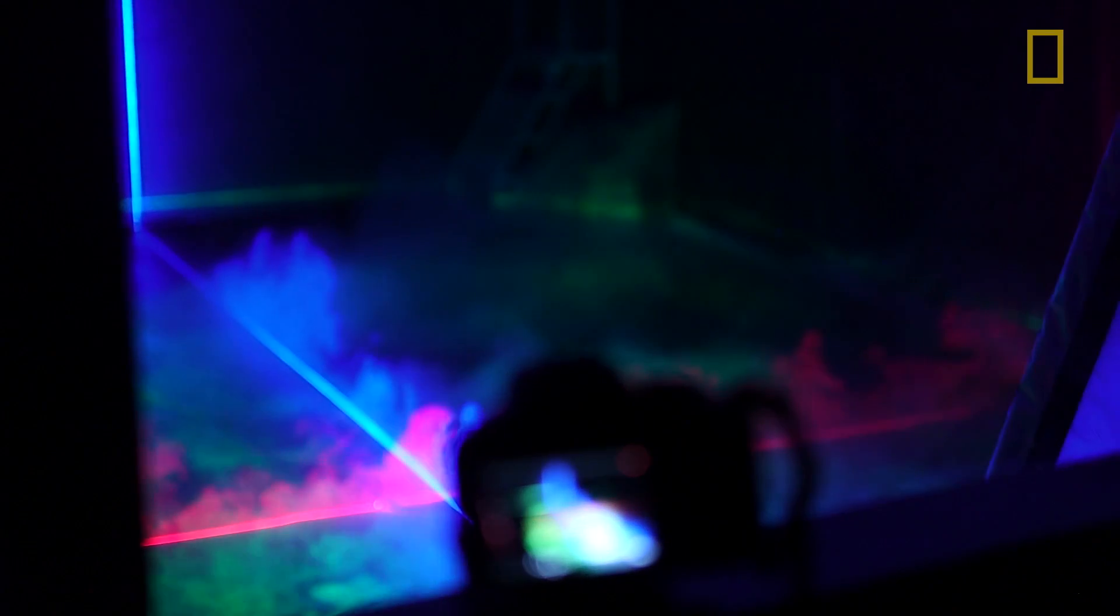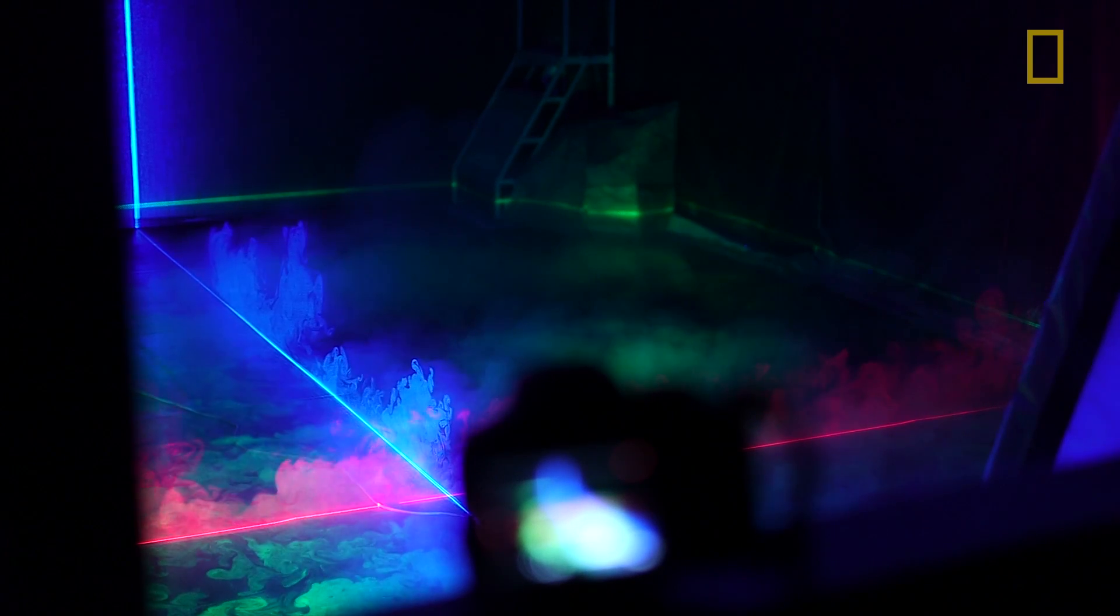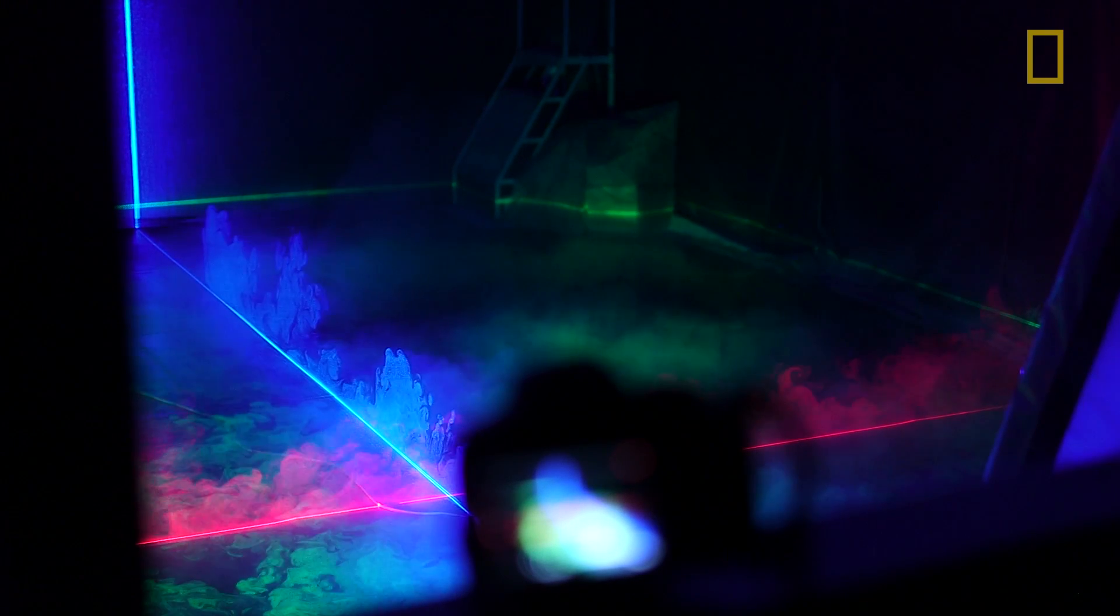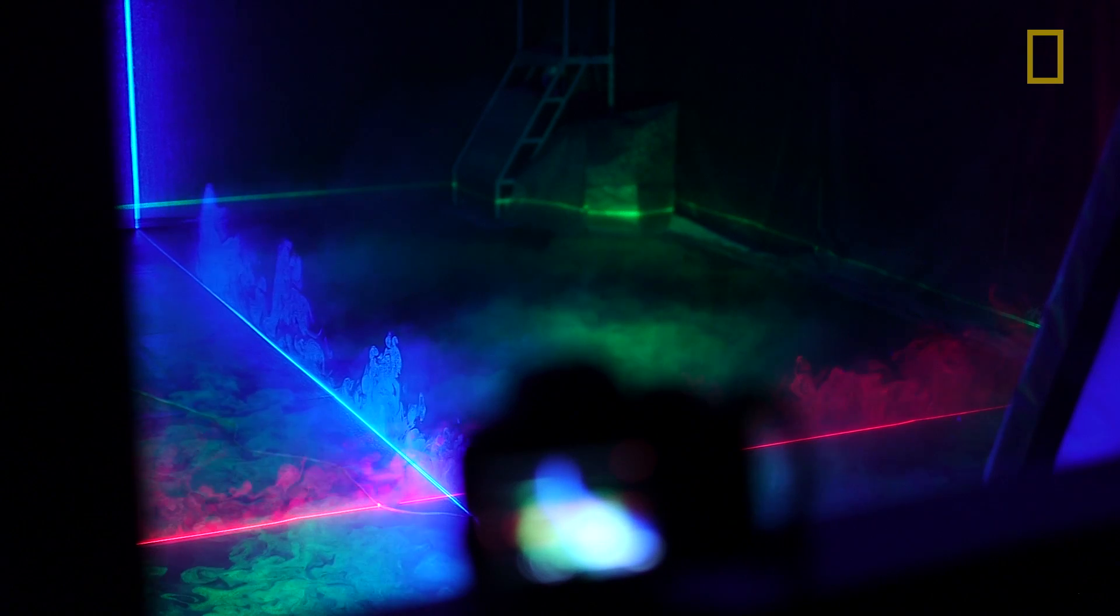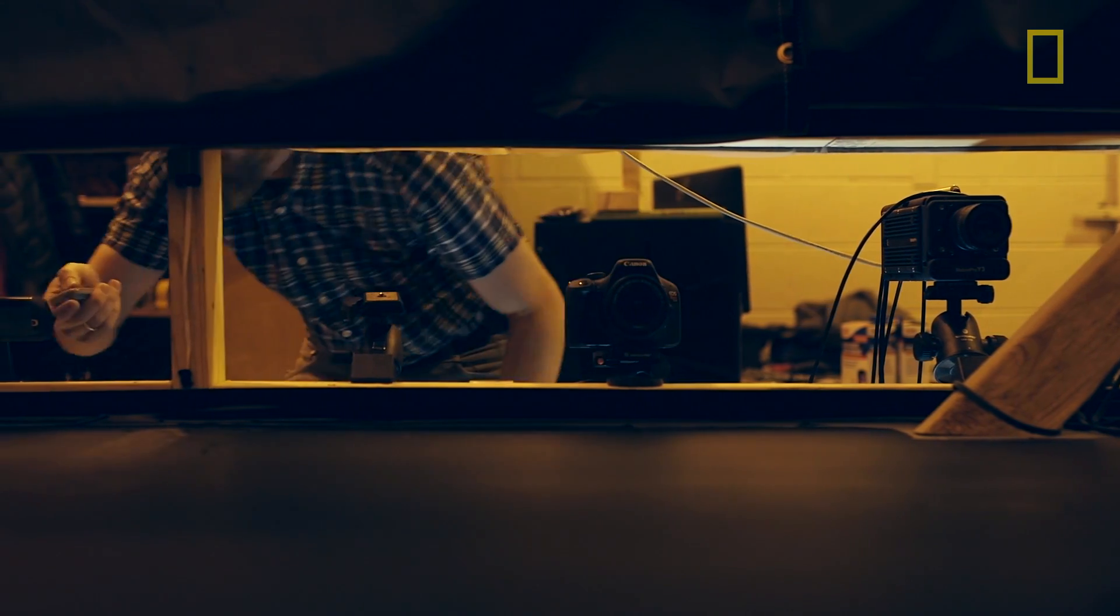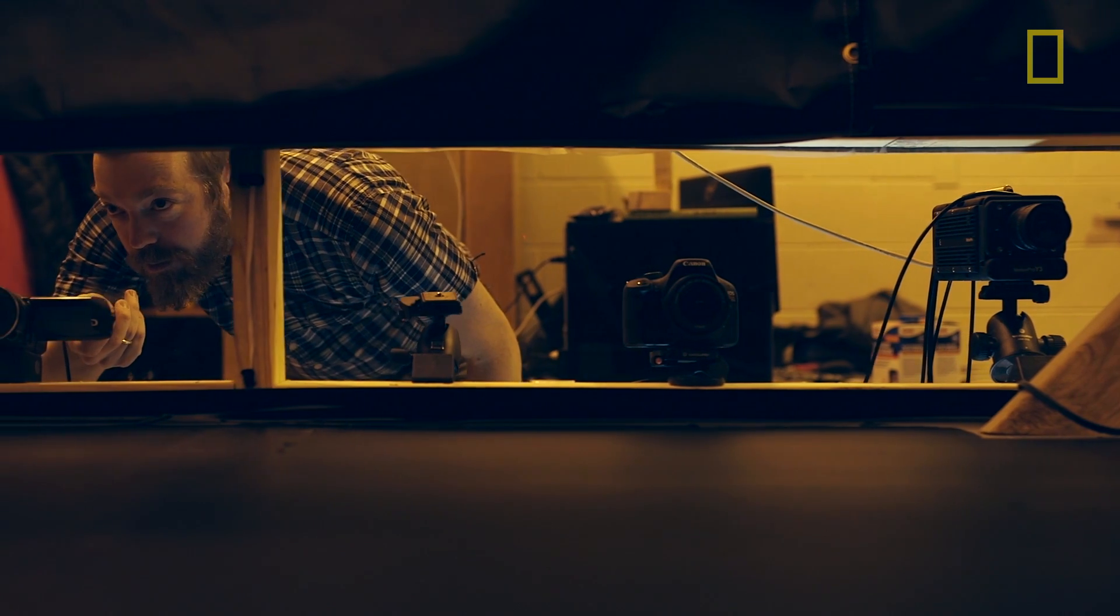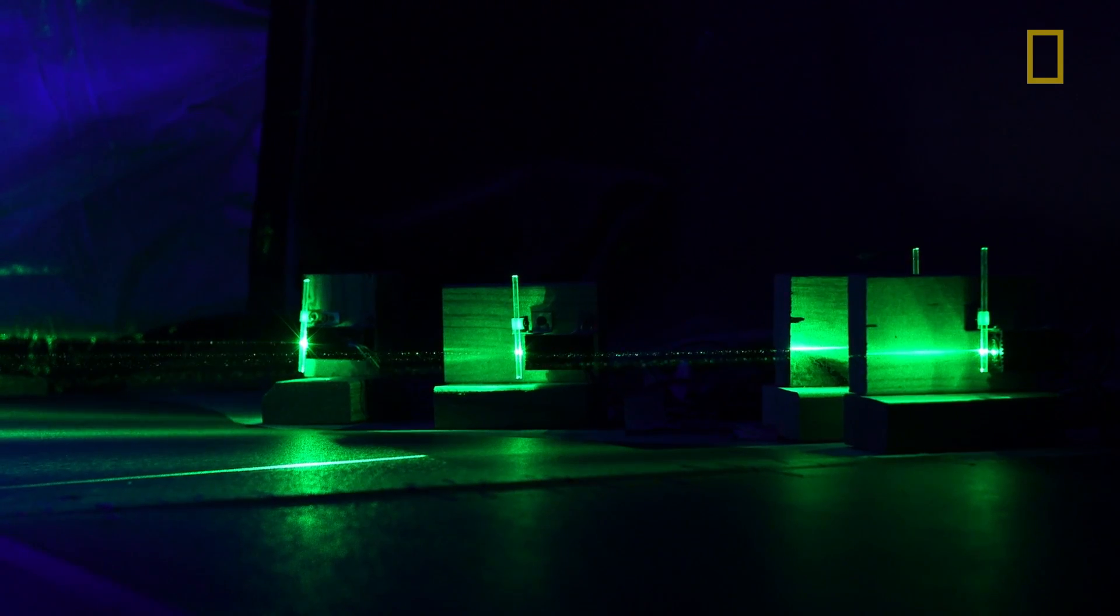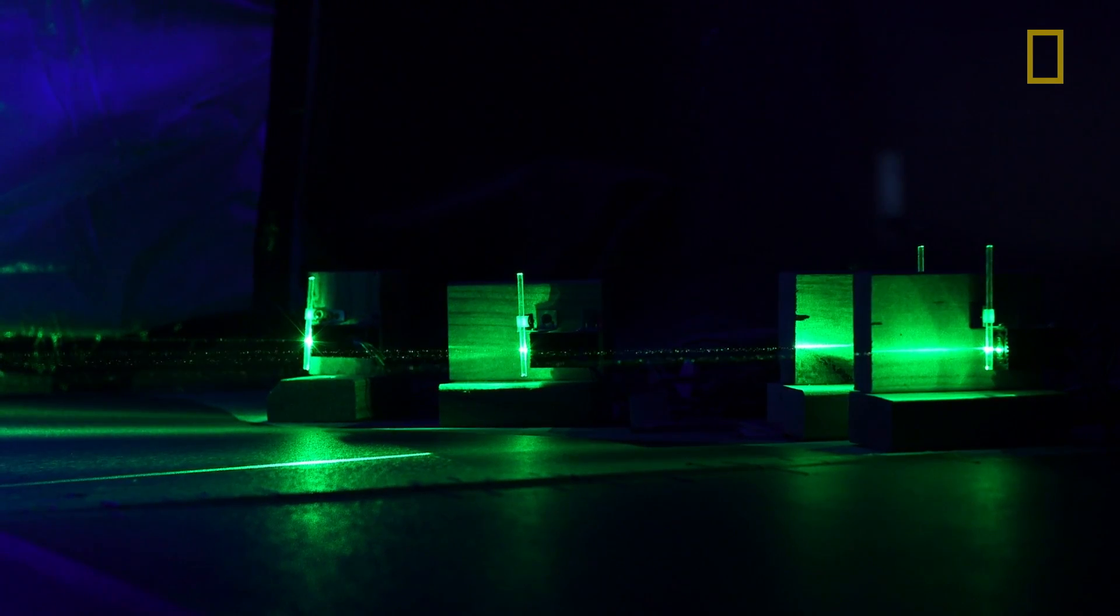One of the challenges of understanding what's going on in a pyroclastic flow is being able to see the interior of that flow. In a natural current, you really only see the outer surface of the cloud. In our experiments, we can see right through the cloud, and so what we use is some lasers to illuminate essentially a single slice through the current.